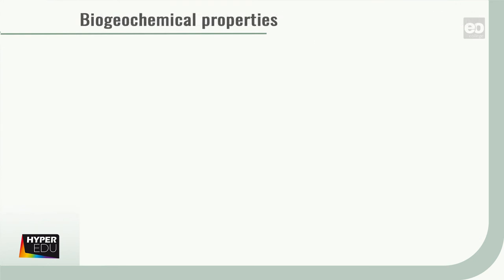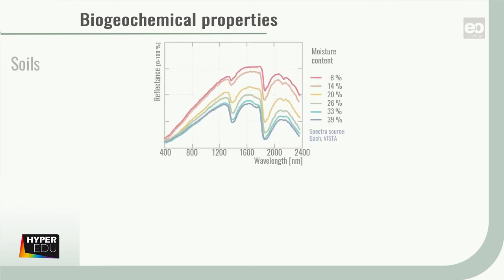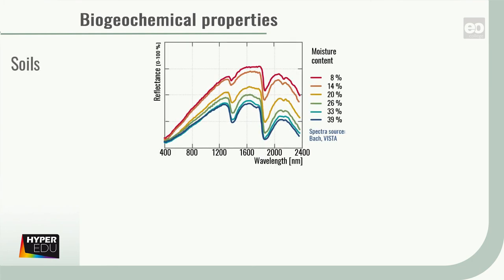Besides these physical influences, the reflective properties of an object are of course also influenced by its chemical characteristics. For example, the reflectance spectra of soils are largely influenced by its organic content and mineral composition, as well as moisture and grain size.